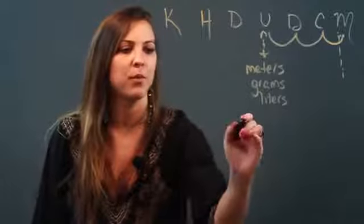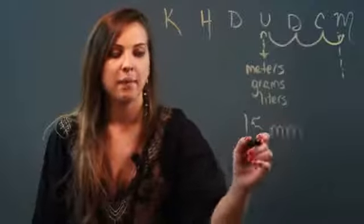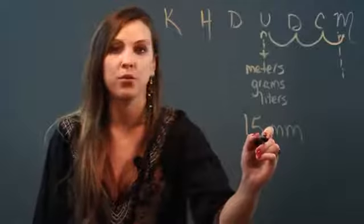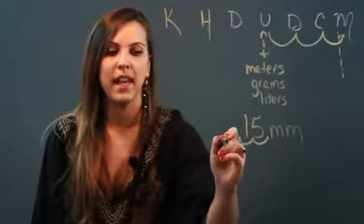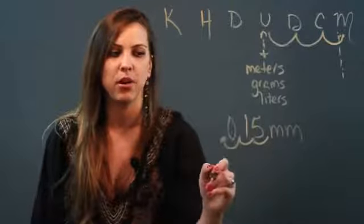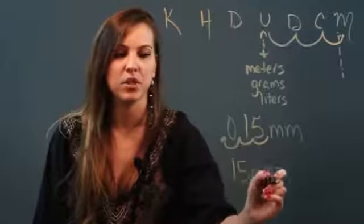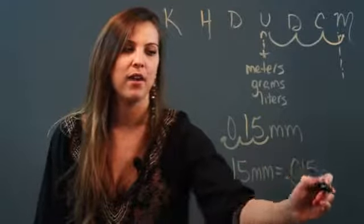If you had, for example, 15 millimeters, I'm going to take the decimal in 15, which you know when you don't have one you just put it right after the last number, and I'm going to go three spaces left: one, two, three. Any empty space is going to be filled in with a zero. So that means 15 millimeters equals 0.015 meters.